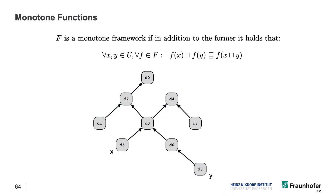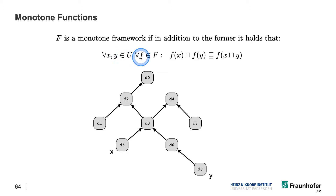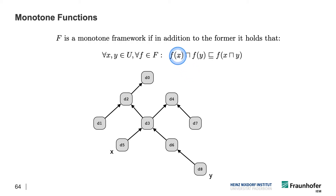A particular F is a monotone framework if, in addition to everything discussed so far, we have the following relationship. For every two domain elements in our partial order that we apply F to, and for every such F — so we demand this for all the flow functions in the system — the following has to hold: if we apply the flow functions first to the individual elements and then merge the result, that has to be smaller than if we merge first across the two elements and then apply the flow function.